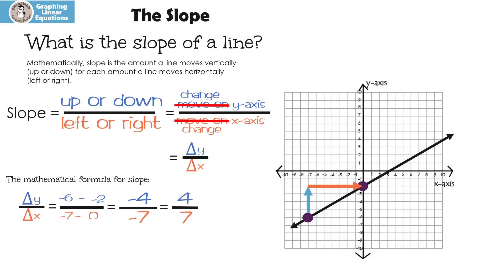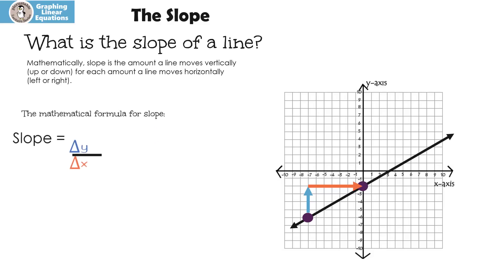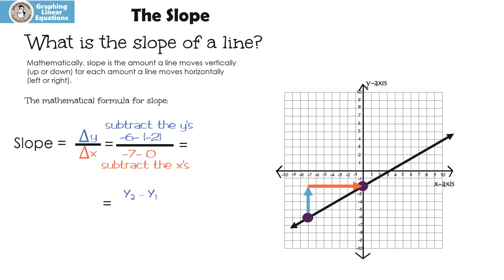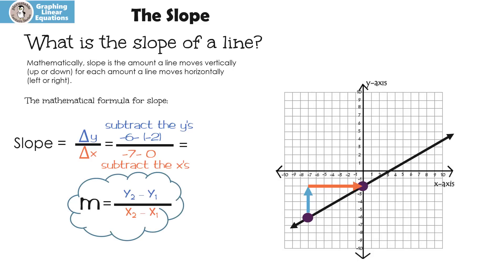How can we translate this into a formula? What we do is subtract the y's over subtracting the x's. We have two points: that's negative six minus negative two over negative seven minus zero. That's the same thing as taking the second y minus the first y over the second x minus the first x — and that's our equation.